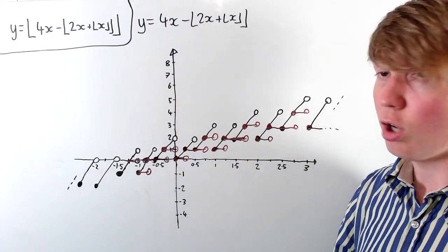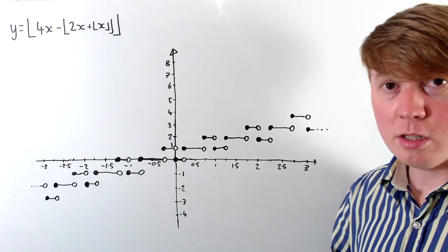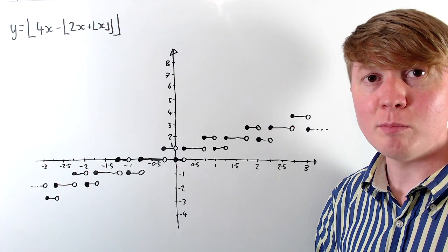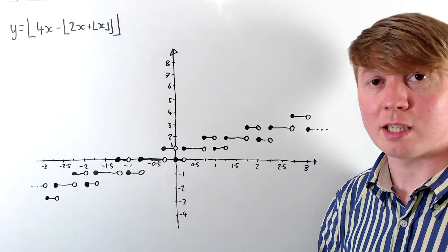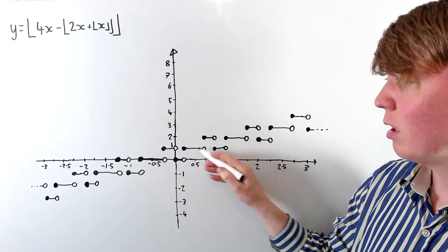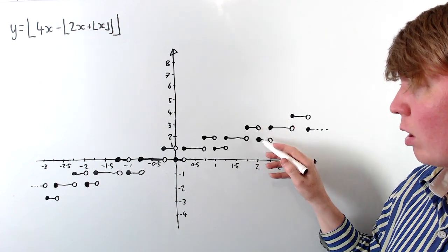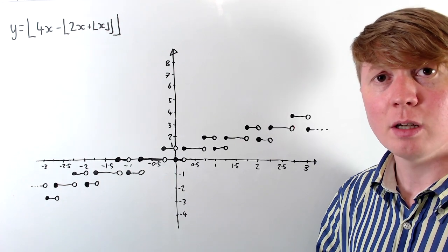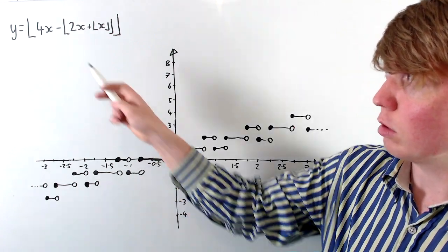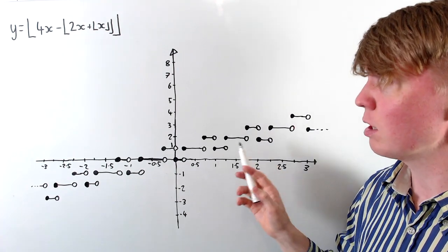This is what our final graph looks like — a really nice repeating structure. Starting with something that looks very complicated, by breaking it down into small steps we can understand exactly what's going on. The pattern can be described simply as: across a quarter up one, across a half up one, across a quarter down one, then repeat. It's really neat. This is particularly interesting to explore in Desmos — there's a link in the description where you can also try tweaking the coefficient of 4 to get some very different looking graphs with quite small changes.